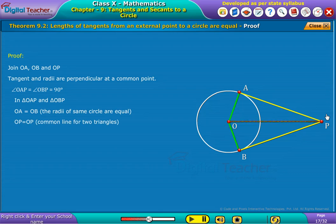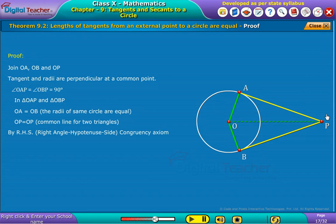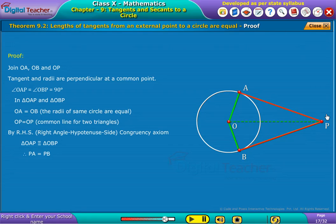Since there is common line for two triangles, we write OP is equal to OP. Therefore, we say that RHS right angle hypotenuse side congruency axiom triangle OAP is congruent to triangle OBP. If two triangles are congruent, then all sides and angles are equal. Therefore, PA is equal to PB.